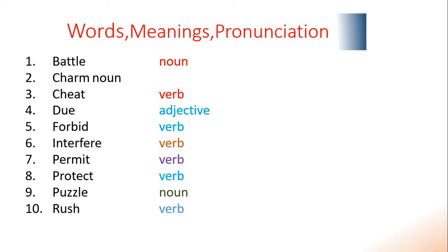Battle in Dari means 'Nabart' / 'Jang.' Number 2: charm means 'Jazaab, Dilkash'; in Pashto, 'Zdara rakhkunke.' Word number 3: cheat means 'Firibdodan, Takalubkardan, Nakalkardan'; in Pashto, 'Dukawarkawal, Nakalkawal.'